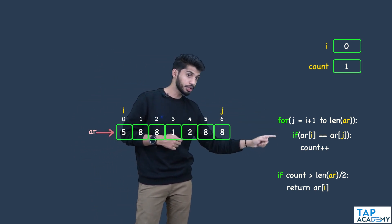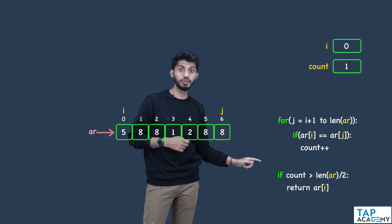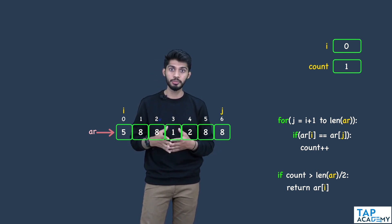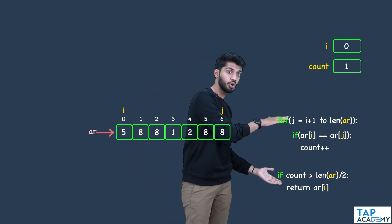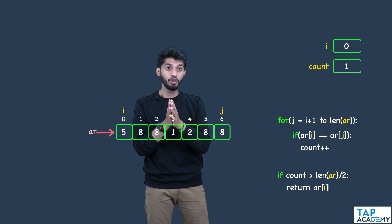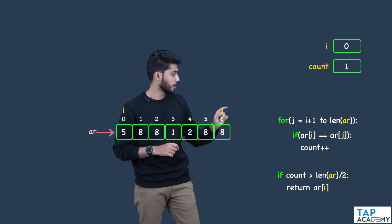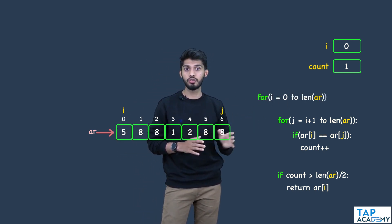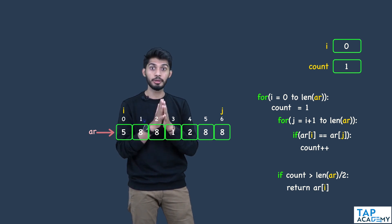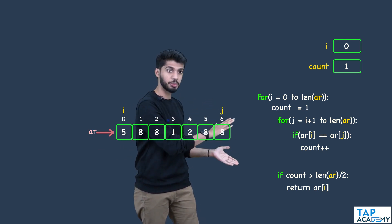Since the same thing has to be repeated multiple times — checking when i is 0, then 1, then 2, then 3 if the majority is not found — I will write this whole code inside a loop where i starts from index 0 and goes till the last index: for i equals 0 to length of the array. This is the algorithm to find the majority element. Now let us go to LeetCode and write the code.